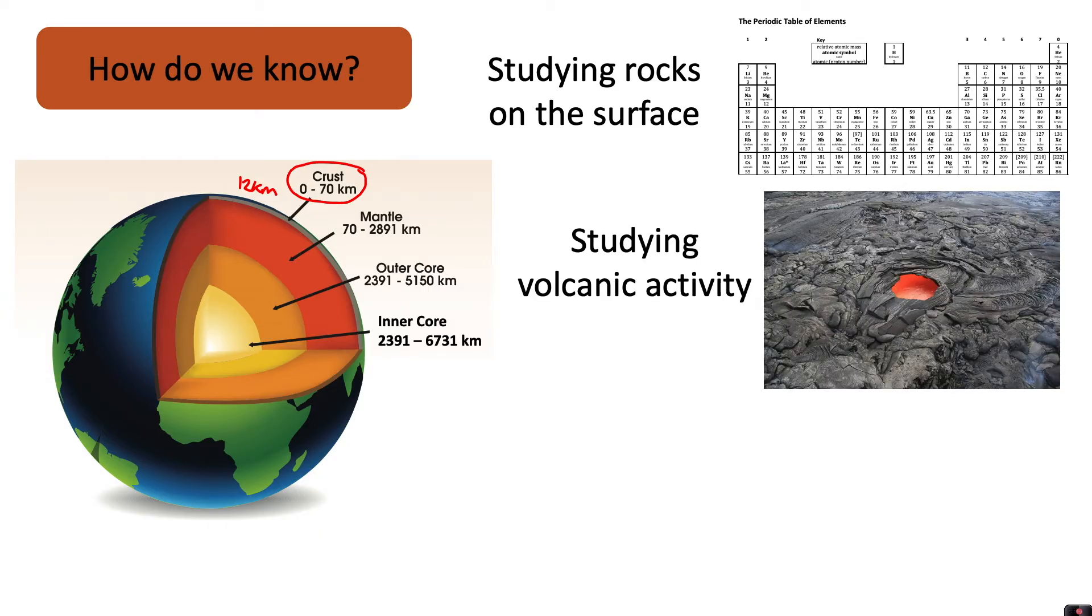Secondly, studying volcanic activity has given them lots of information about the mantle. The molten rock from the mantle can creep up through cracks and can be seen near the Earth's surface. So here scientists can study the composition of the mantle. We call this hot molten rock underneath the Earth magma. And during a volcanic eruption, when that magma is released, we then call that lava. So when the lava cools, it's a lot easier to study and we can have a look at the elements that make up the mantle.